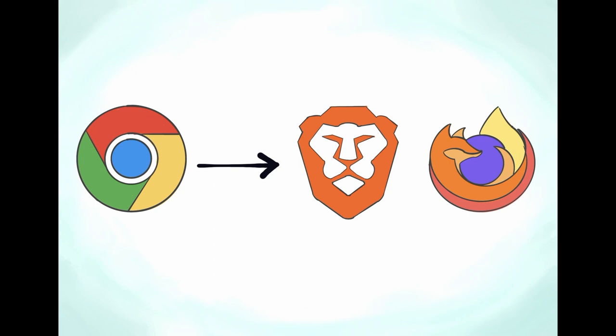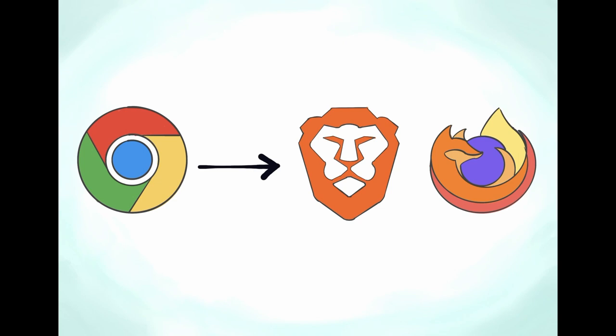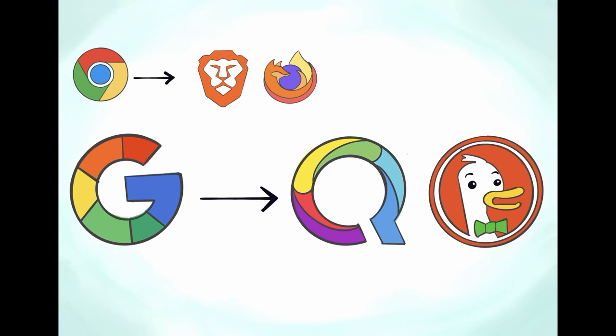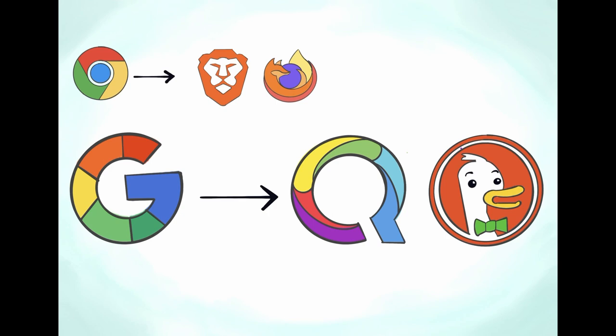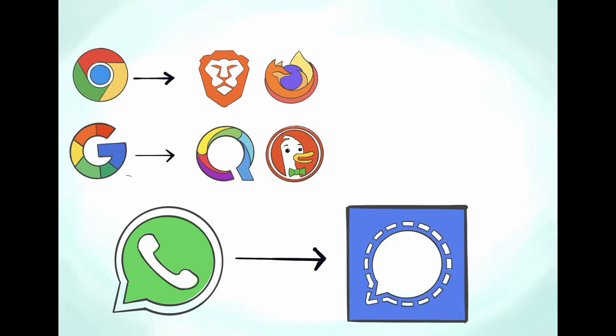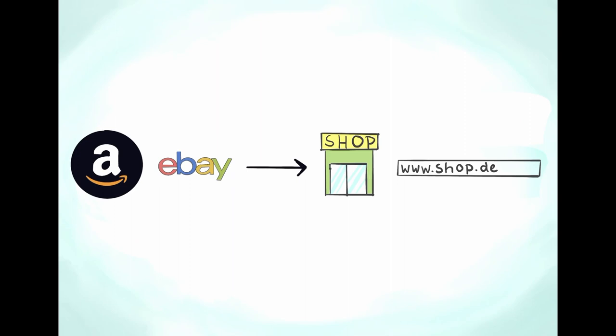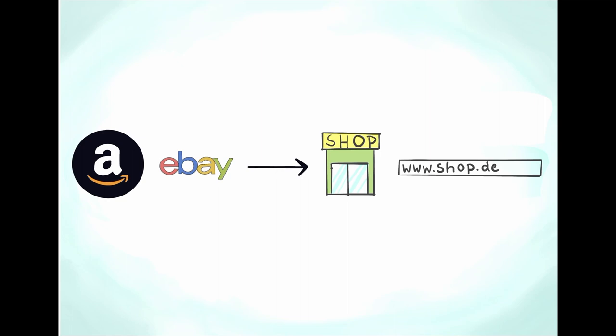Additionally try to use alternatives for services from the big tech companies. Instead of Chrome you can use Firefox or Brave. Instead of looking things up with Google you can use Qwant or DuckDuckGo. They do not track your activities. Google offers a lot of services and you can try to use alternatives. Instead of using WhatsApp try to convince your family and friends to use Signal instead. Instead of buying stuff on Amazon or eBay you can go directly to a shop or to the website of the product vendor.